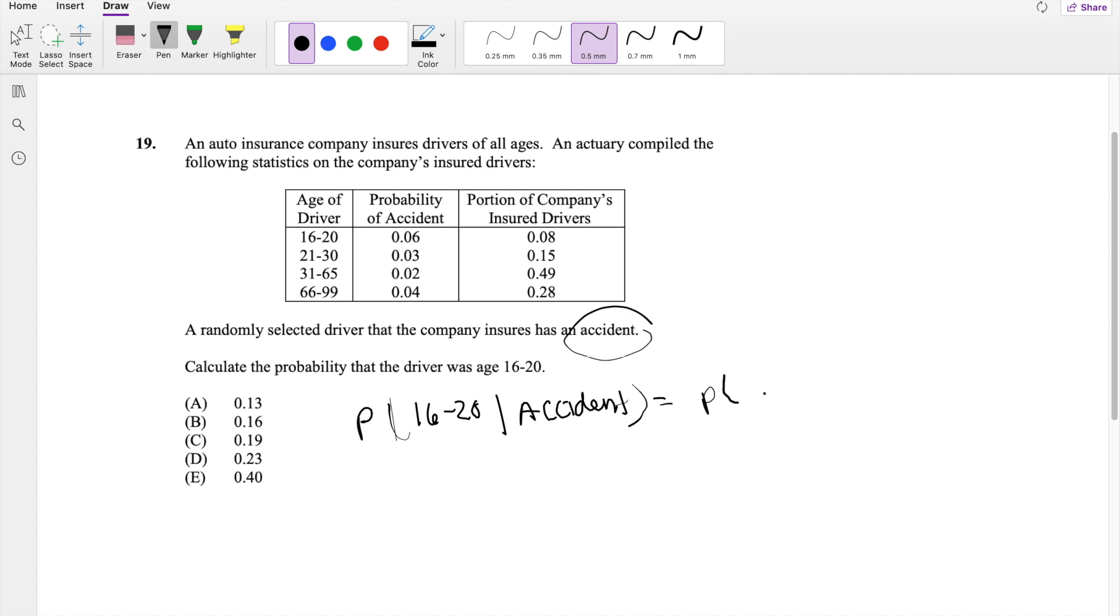So this is equal to the probability that they're between 16 and 20 and have an accident divided by the probability of an accident.